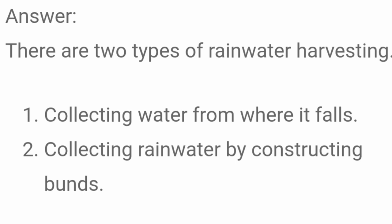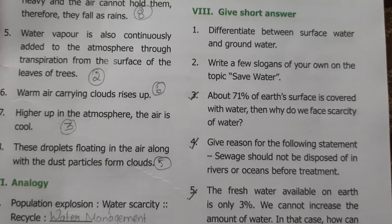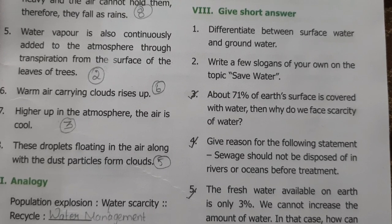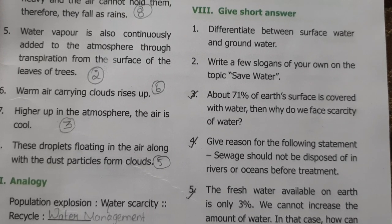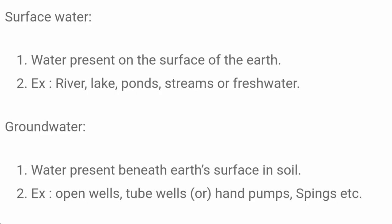What are the types of rainwater harvesting? There are two types: collecting water from where it falls, and collecting rainwater by constructing bunds.